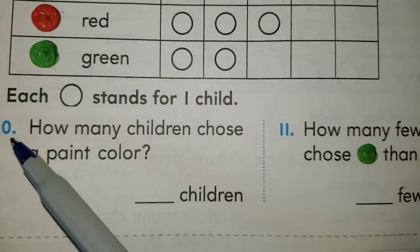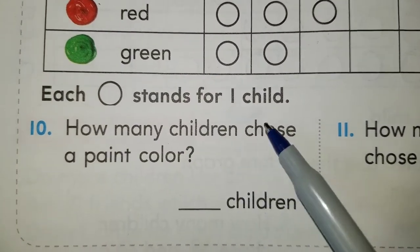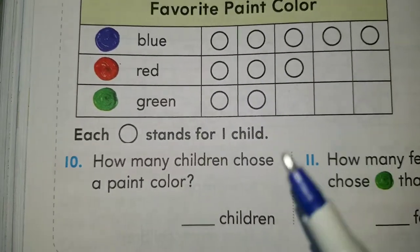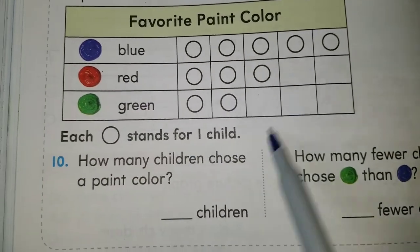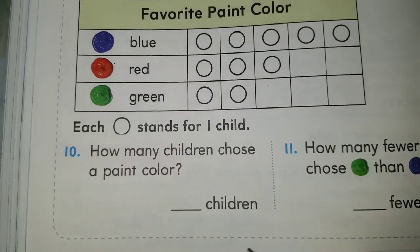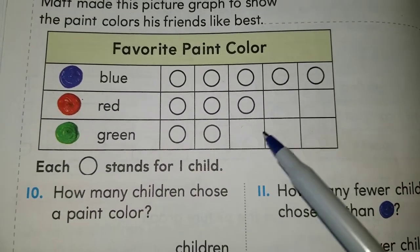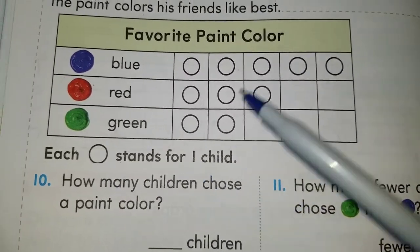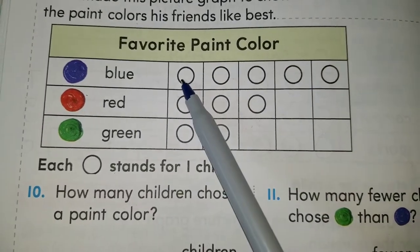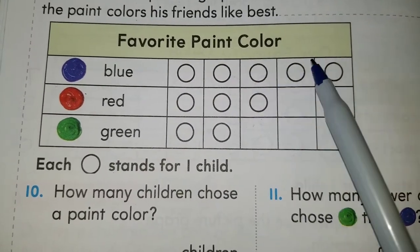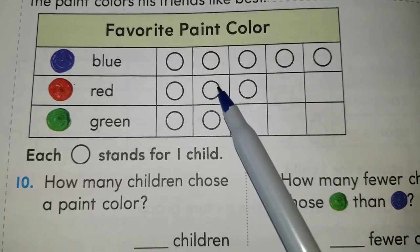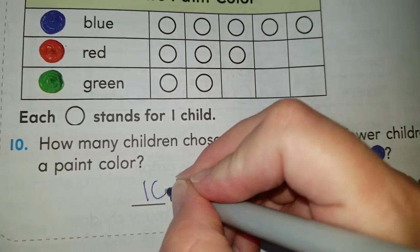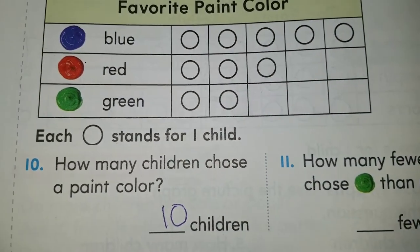Let's do question number ten: how many children chose a paint color — how many children participated? For that, we're going to count all of the circles because we want to know how many children said their favorite color. Here we go: one, two, three, four, five, six, seven, eight, nine, and ten. Ten children chose a paint color.